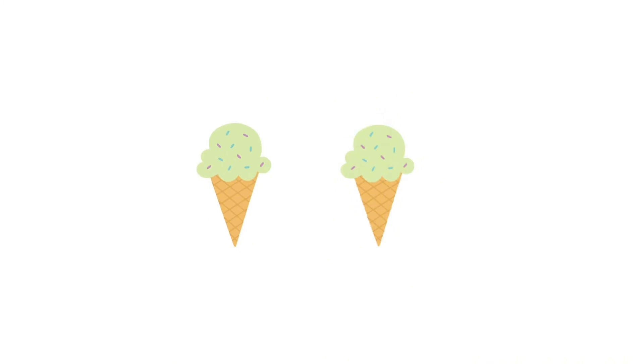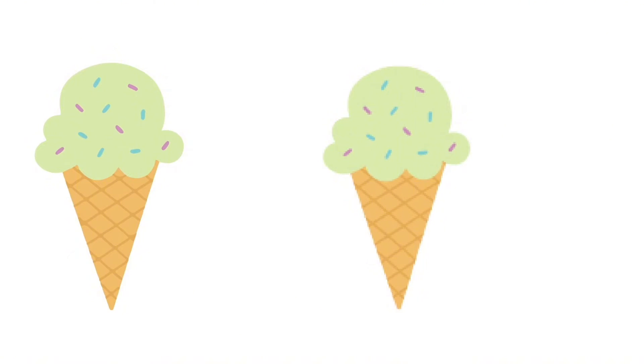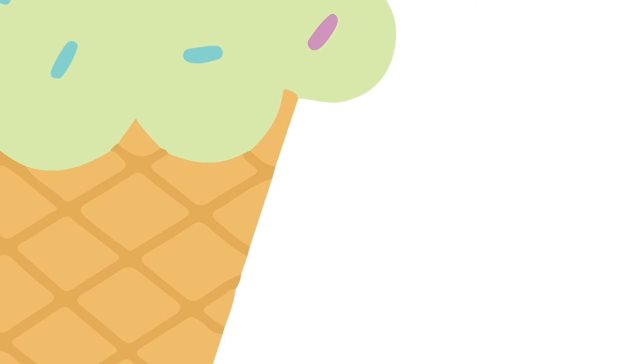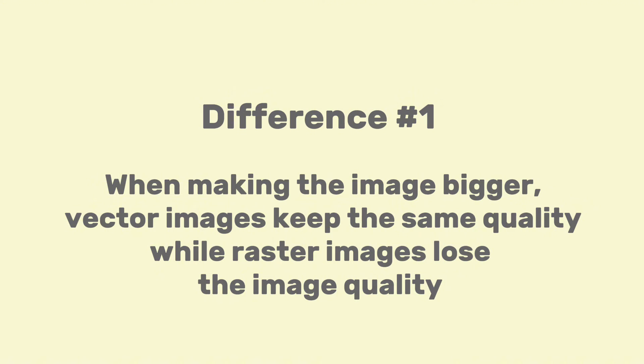Another way to differentiate them is to zoom in. As you can see, the ice cream on the right already starts to get a little blurry and pixelated, and if you zoom in a little more you will see the individual pixels. However, if you move to the vector image on the left, you will see clear, sharp lines.